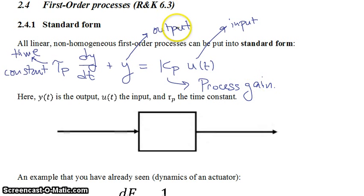If you have a first-order process with an input u of t then this is the differential equation that it will follow. The way that you solve this differential equation will depend on what u of t looks like, how u changes with time, and what your value of your process gain and your time constant are.